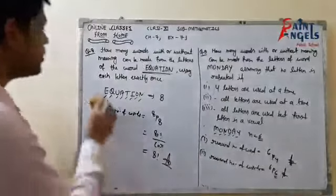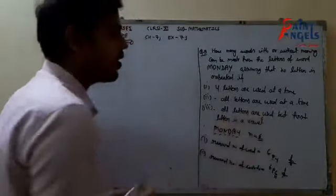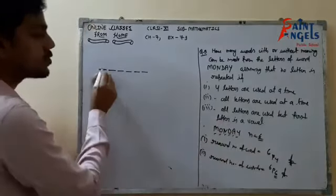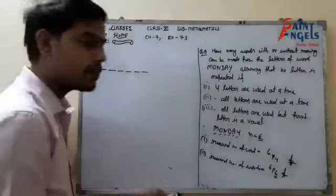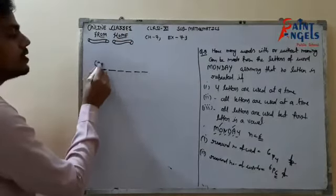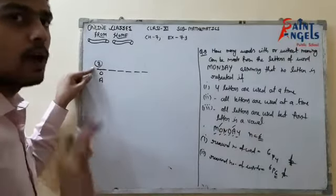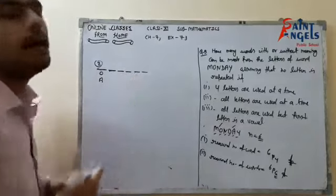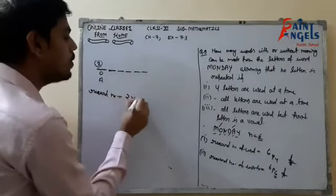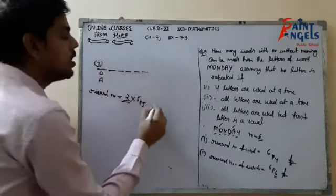Now the third part: all letters are used but the first letter is a vowel. We have to use all 6 letters of MONDAY, but the first letter must be a vowel. How many vowels are in MONDAY? O and A — so there are 2 vowels. I can fill the first place in 2 different ways (either O or A). I will then be left with 5 letters and 5 remaining places, which can be filled in 5P5 ways. So the required number of words = 2 × 5P5.